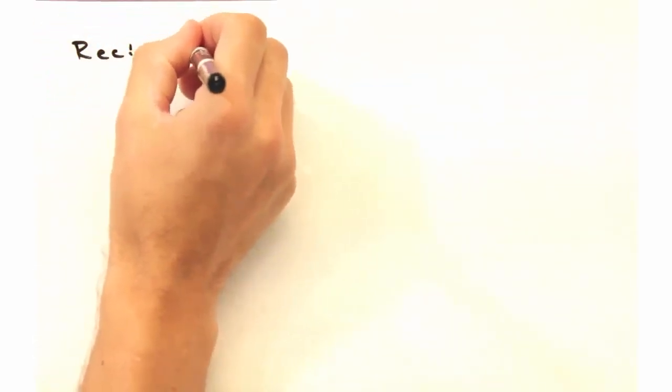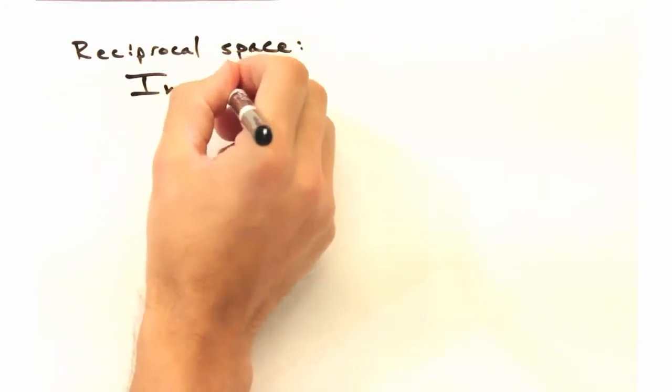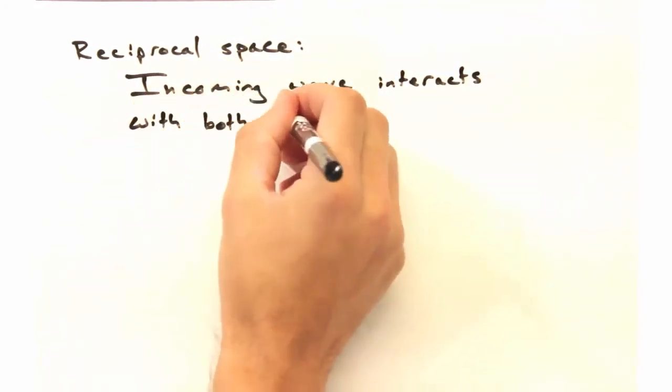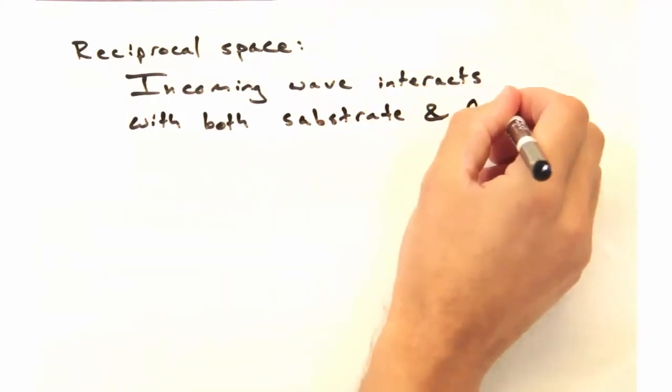Okay, so now that we've got the real space structure, let's take a look at reciprocal space. If the film is relatively thin, an incoming wave will interact with both the substrate and the film at the same time.